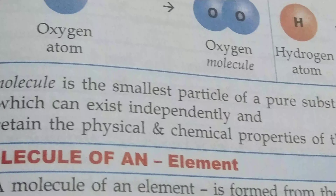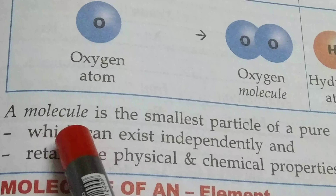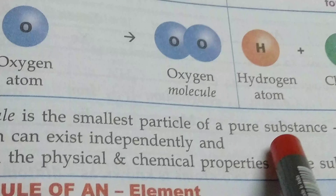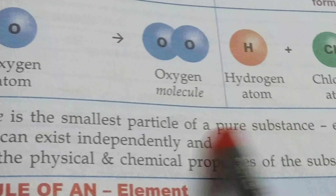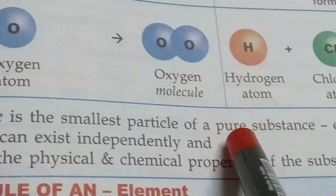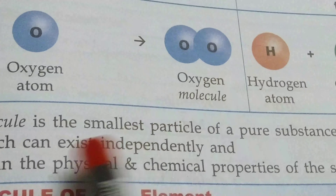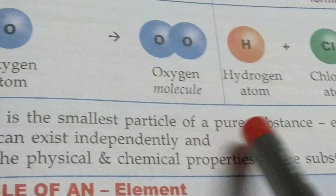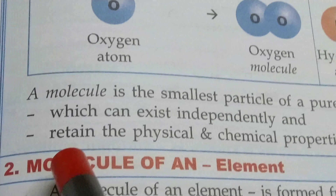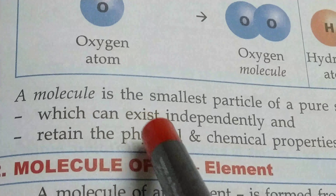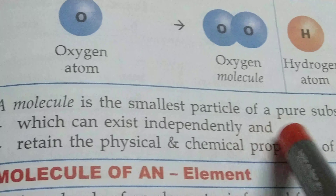A molecule is the smallest particle of a pure substance — element or compound. Normally, an atom is the smallest particle of any substance, whereas here the point is 'pure substance.' So a molecule is the smallest particle of a pure substance which can exist independently and retain the physical and chemical properties of the substance.